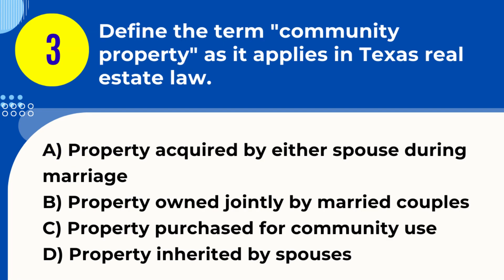Question 3. Define the term community property as it applies in Texas real estate law. A. Property acquired by either spouse during marriage. B. Property owned jointly by married couples. C. Property purchased for community use. D. Property inherited by spouses. Answer: A. Property acquired by either spouse during marriage. Explanation: In Texas, community property refers to property acquired by either spouse during the marriage, excluding inheritances and gifts.